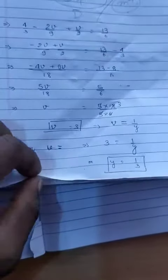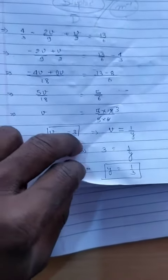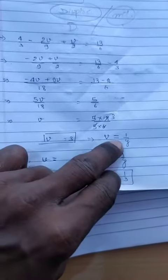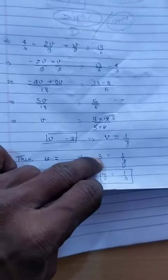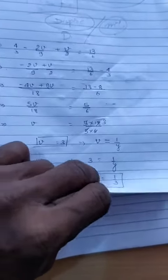So the v has been, sorry, 3, and we can write in the place of v, it is 1 upon y. So 3 equal to 1 upon y. Thus, y equal to 1 upon 3.